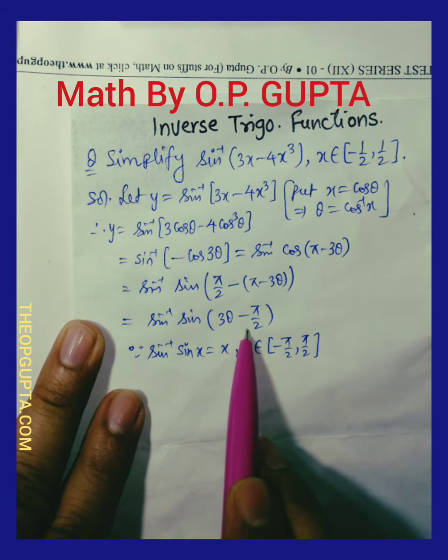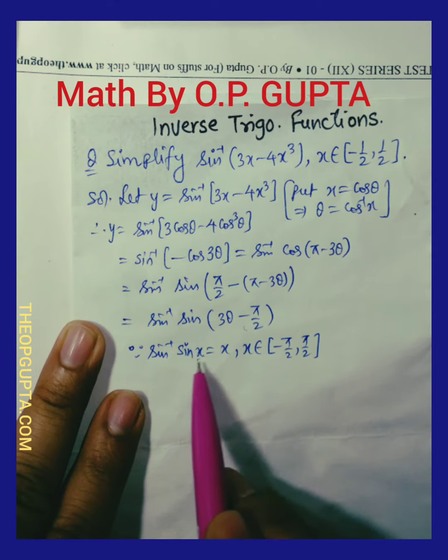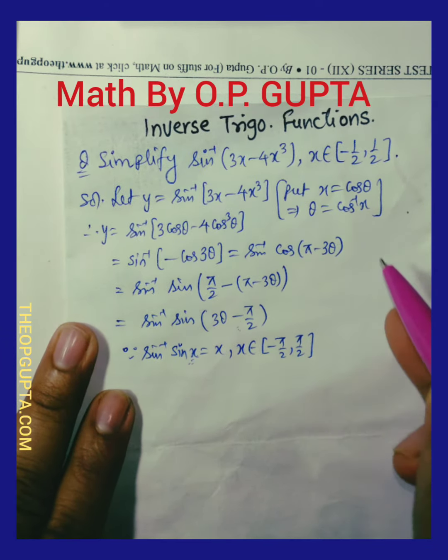Sine inverse of sine x is equal to x if x belongs to the closed interval negative pi by 2 to pi by 2. So here it is being assumed to be x as reference with this formula.